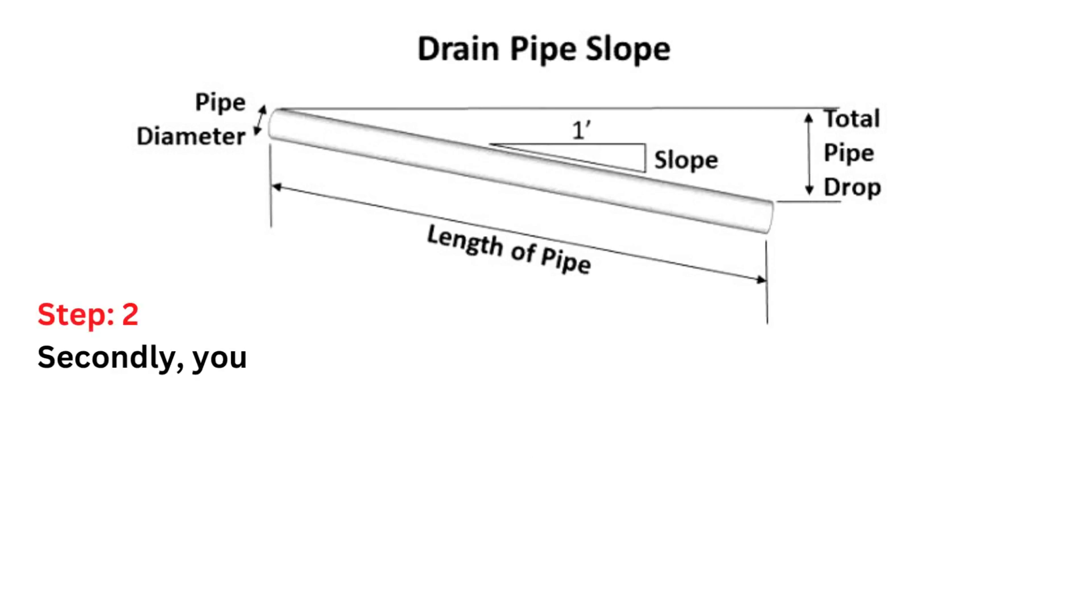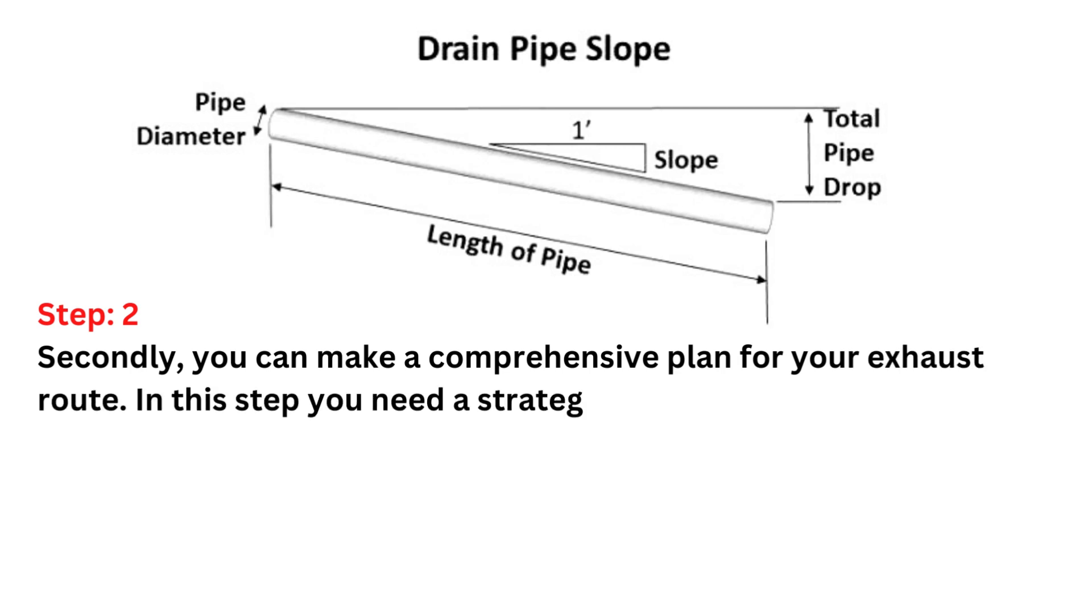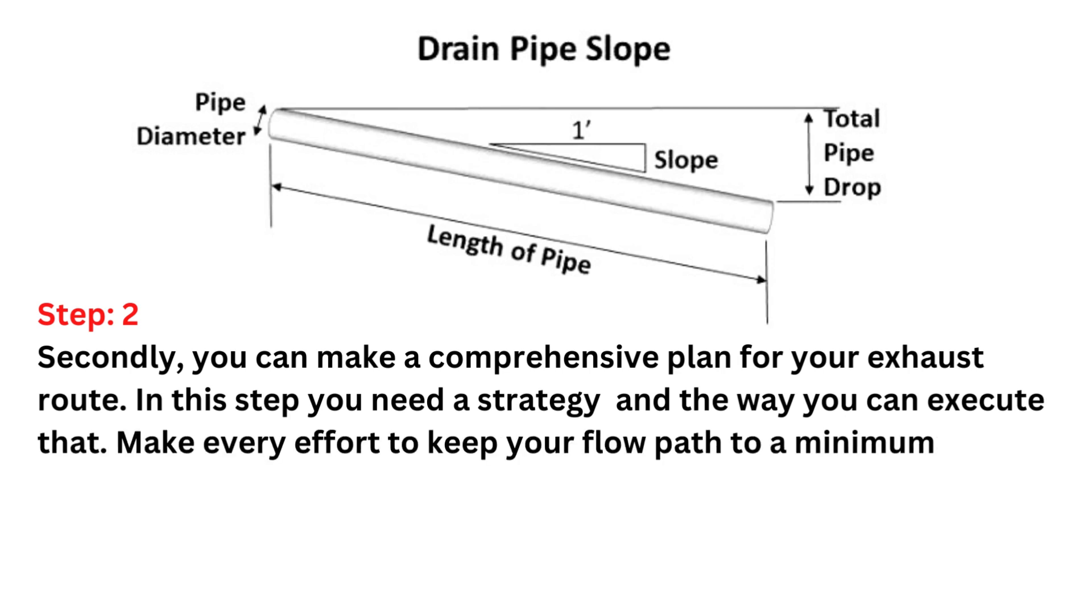Step 2. Secondly, you can make a comprehensive plan for your exhaust route. In this step, you need a strategy and the way you can execute that. Make every effort to keep your flow path to a minimum.